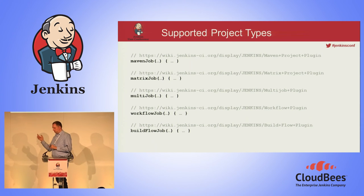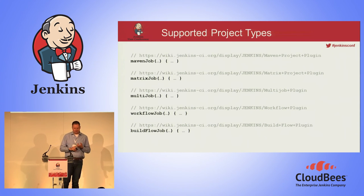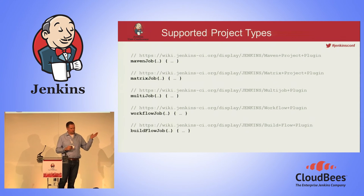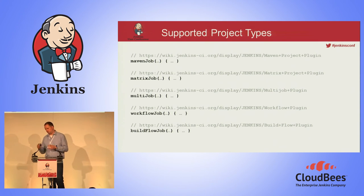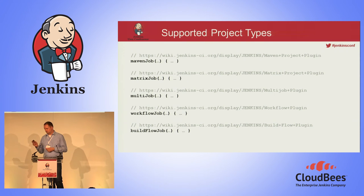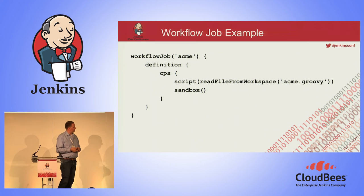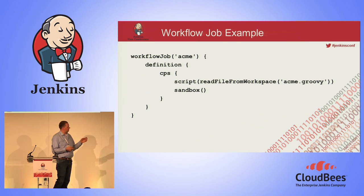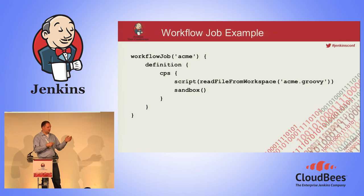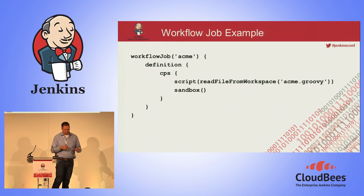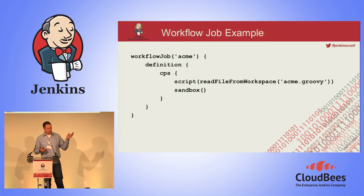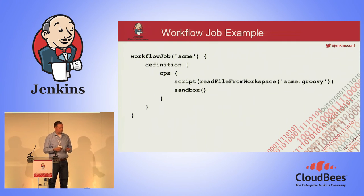You can also create Maven jobs — the job method creates freestyle jobs, but we have support for other project types including Workflow, Matrix, and multi-job configurations. This is an example for a custom project type like Workflow — the DSL can vary depending on the project type. The Workflow has no build steps or publishers like that; instead, here we're reading a workflow script from the file system. Newer versions of the workflow plugin can do that directly, so you don't really need the DSL for that, but here's an example.